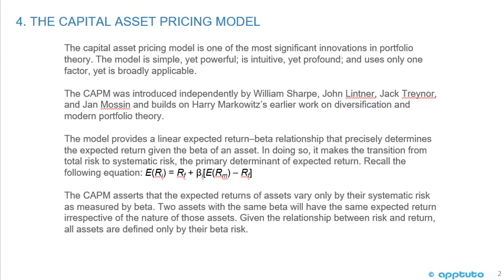The model provides a linear expected return-beta relationship that precisely determines the expected return given the beta of an asset. In doing so, it makes the transition from total risk to systematic risk as the primary determinant of expected return. The expected return equals the risk-free rate plus the beta times the expected return of the market minus the risk-free rate, which is the market risk premium. The CAPM asserts that the expected returns of assets vary only by their systematic risk as measured by beta.